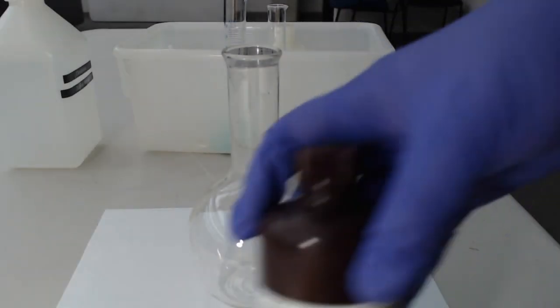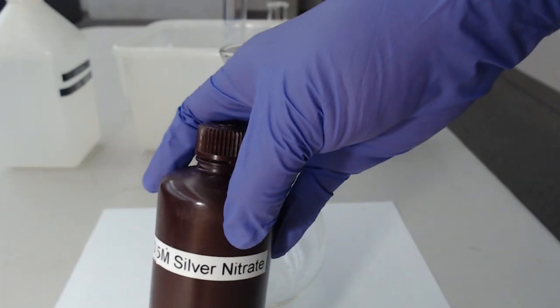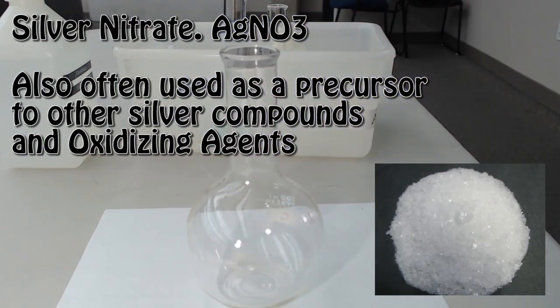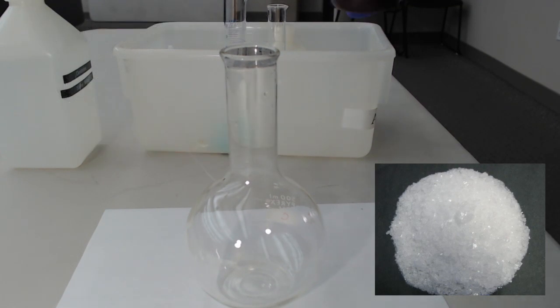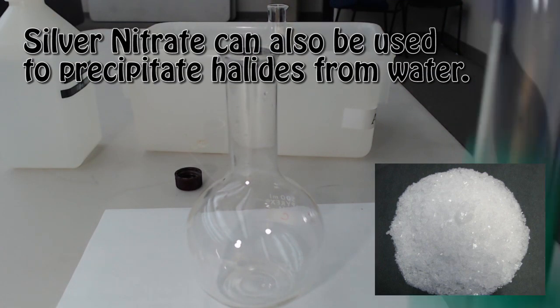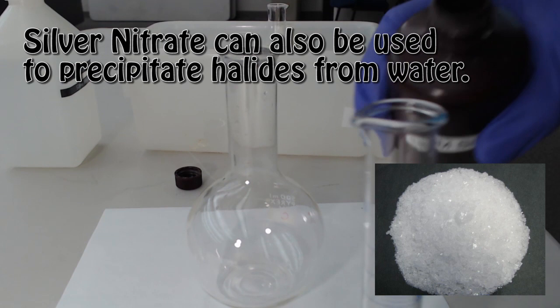So what I have here is silver nitrate, AgNO3. Silver nitrate actually does have a ton of different applications. It used to be used a lot back when people were manually developing their own film, like black and white film.